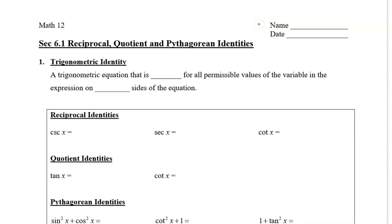Hello and welcome to Mrs. Law's class. In this video, I'm going to show you how to use the reciprocal, quotient, and Pythagorean identities to find non-permissible values, and then to use them to simplify and prove expressions.